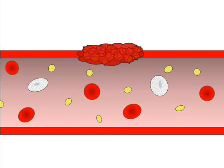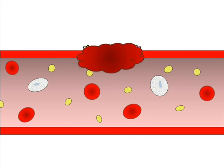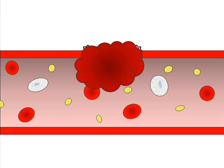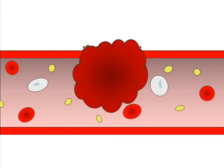So within a matter of minutes, a sturdy plug is formed to arrest the outflow of blood. But too much coagulation activity allows the clot to grow much larger than it should.